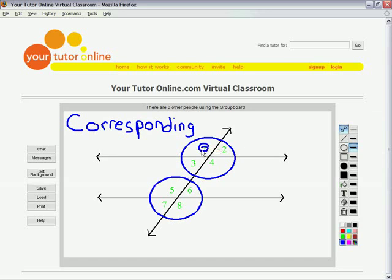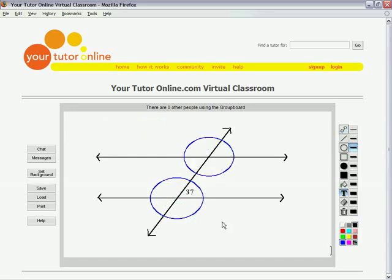Angle 1 is in the top left corner of this set, so its corresponding angle is in the top left corner of the other set. So angle 1 and angle 5 are corresponding angles. Corresponding angles are congruent, meaning they have the same angle measure.